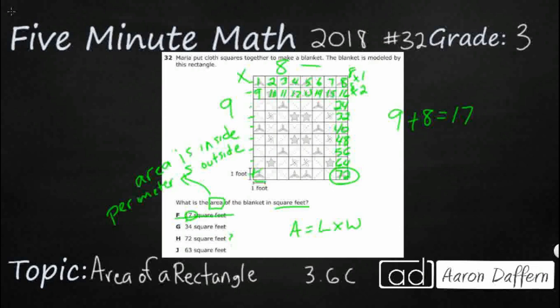34 happens to be 17 plus 17. So I'm guessing for some reason they took this wrong number and doubled it. But still, we know there's 72.